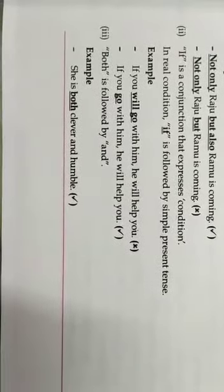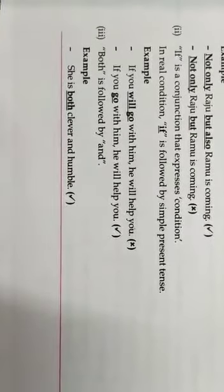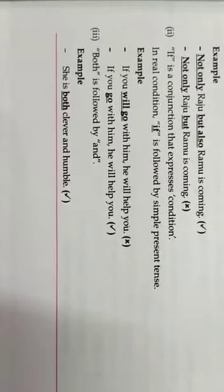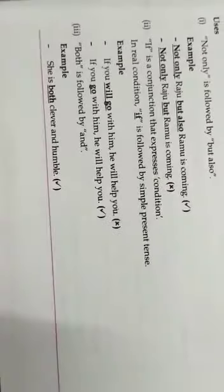Next is both is followed by and. She and both clever and humble. She is both clever and humble. So in this sense also we can use the conjunction.